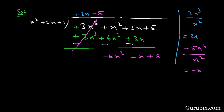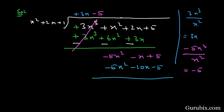Now we multiply all the terms of the divisor by −5, giving us −5x² − 10x − 5. We change the signs and cancel out the terms. The final remainder is 9x + 10. This is how we divide a cubic polynomial by a quadratic polynomial.